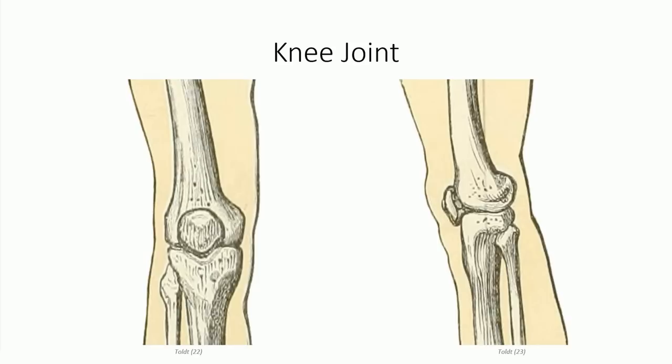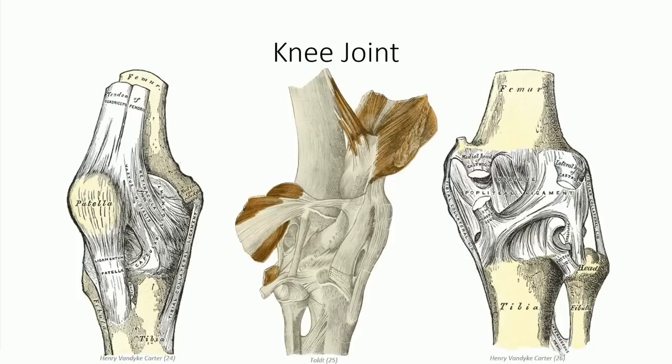Due to the inherent instability of the knee joint — a larger surface articulating with a smaller surface below — the knee is reinforced with a strong joint capsule and associated reinforcing ligaments. The anterior portion of the capsule fuses into the patella bilaterally, blending superiorly with the patellar tendon and thickening inferiorly to form the patellar ligament. As a result, the patella is continuous with the joint capsule and makes up the anterior wall, replacing the capsular tissue. Posteriorly, the capsule is reinforced by additional ligaments.